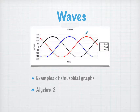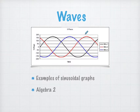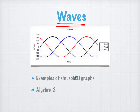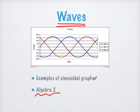Now let's look at the next concept: waves. Waves are actually quite a nice example — they are examples of sinusoidal graphs: sine functions or cosine functions. This does come up in Algebra 2. Let's look at a couple of examples and see what happens.